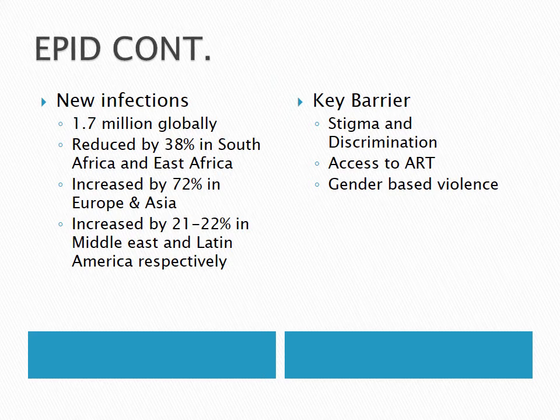Another barrier is access to antiretroviral therapy (ART). Of the 38 million people living with HIV, about 12 million are not on ART. ART reduces the viral load, and when the viral load is reduced, the rate of transmission is also reduced. This is why there is a need for as many infected people as possible to be on treatment — it has both individual health benefits and public health importance in reducing new cases.